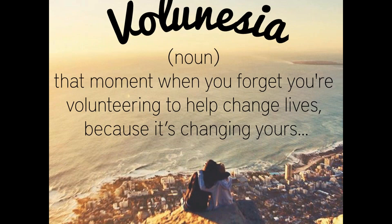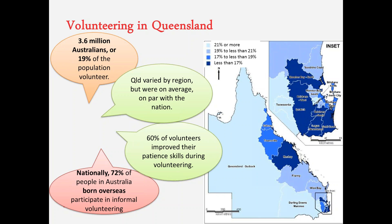There's also an acknowledgement that volunteering changes you as much as it changes the organisation or the clients you're working with. For those of you that volunteer, you're part of 19 per cent of our population. In the State of Volunteering Report in 2016, the thing people said they improved the most through volunteering was patience. Queensland statistics align a lot with national ones, but other surveys estimate volunteer rates to be at least double — around 40 per cent of people actually volunteer.